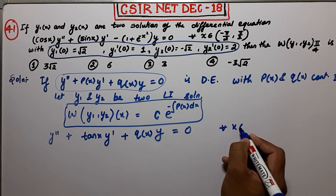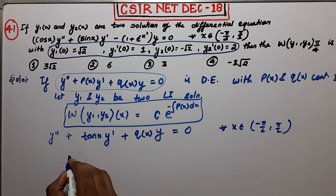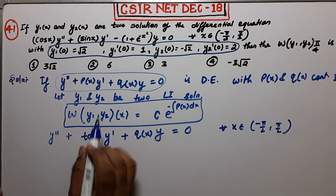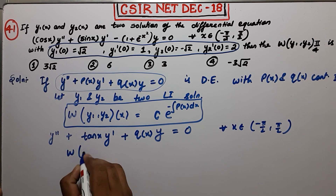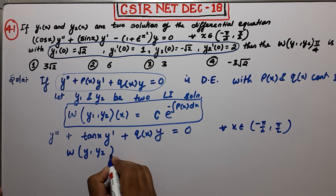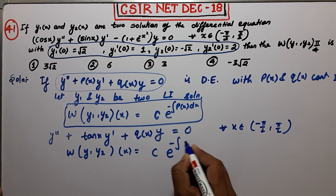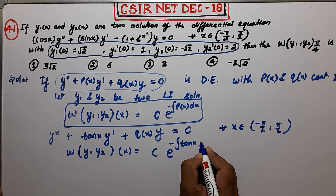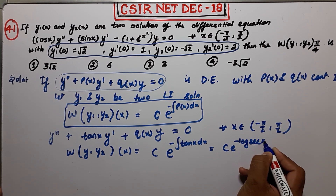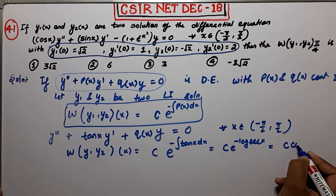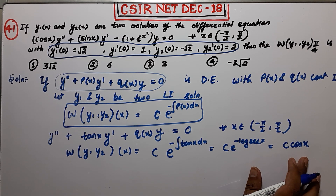So the interval is (-π/2, π/2). By the note, we can directly say the Wronskian of y1 and y2 is given by W = C·e^(-∫tan(x)dx) = C·e^(-log|sec(x)|) = C·cos(x). So your Wronskian is C·cos(x). The only thing required now is to find the constant C.